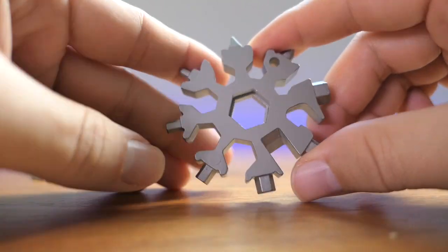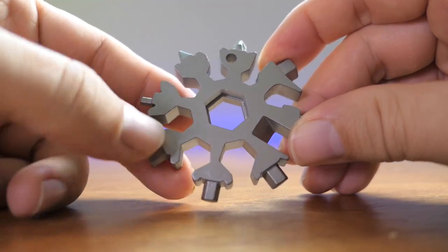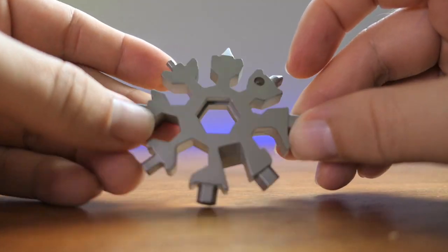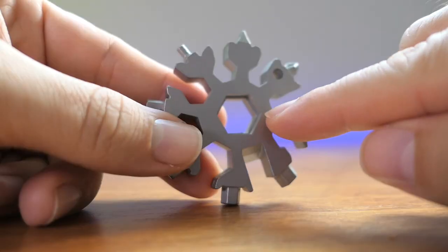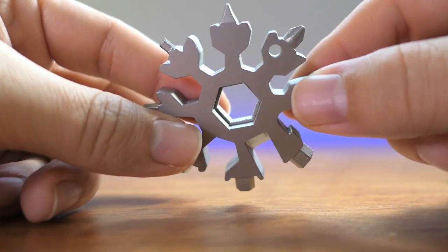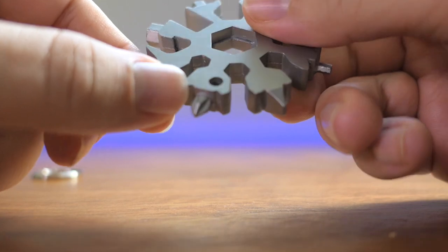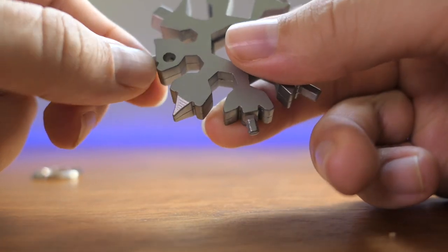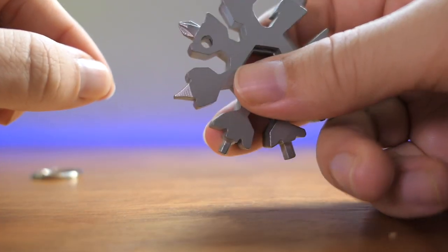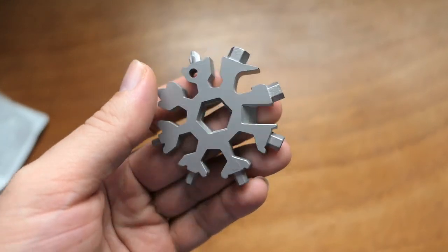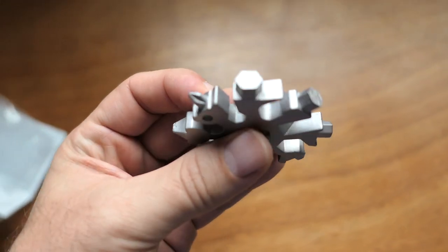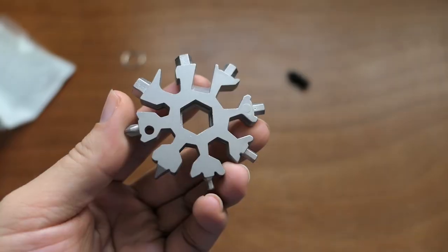But for the size of this thing, it definitely works more with smaller type hex bolts. Most of these tools, as you can see here, are all for hardware that has six sides like hex bolts and things like that. It's pretty cool that they included a Phillips and a flathead screwdriver there. The weight of this thing is pretty significant since it's just solid metal.